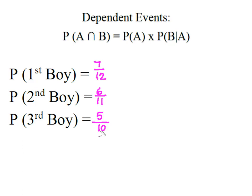Because these are intersection or AND probabilities, we're going to take the 7 over 12 times the 6 over 11 times the 5 over 10, and I'm going to find out that that's 210 over 1,320.